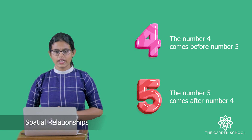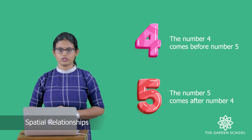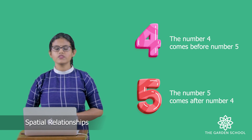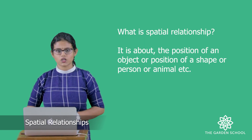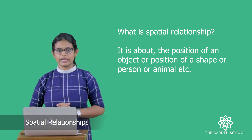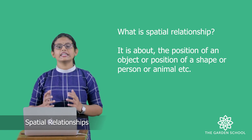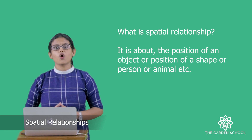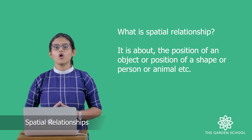Number five comes after number four. So both these numbers have their own position. These are called spatial relationships — in a simple way we can say it is about the position of an object, or position of a shape, or person, or animal, etc.